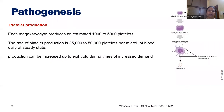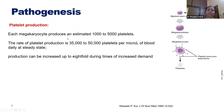Regarding platelet production: from the myeloid stem cell, megakaryoblasts arise and differentiate further to produce megakaryocytes, from which platelets are derived. Each megakaryocyte produces approximately 1,000 to 5,000 platelets. The rate of platelet production is 35,000 to 50,000 platelets per microliter of blood daily at steady state, and production can increase up to 8-fold during times of increased demand.